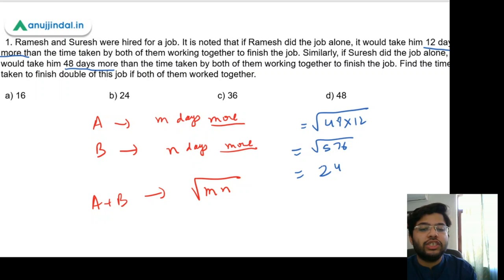And now the question did not ask us the time taken to finish this job, but it asks the time taken to finish double of this job. So double would take double amount of time, which would be 24 times 2, which is 48.